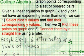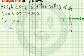Let's start with the equation 2x minus y equals 6. After setting up a table of values, we want to graph it. So what we're going to do is let x be a nice convenient value. I like to start with 0 because it's easier to work with.